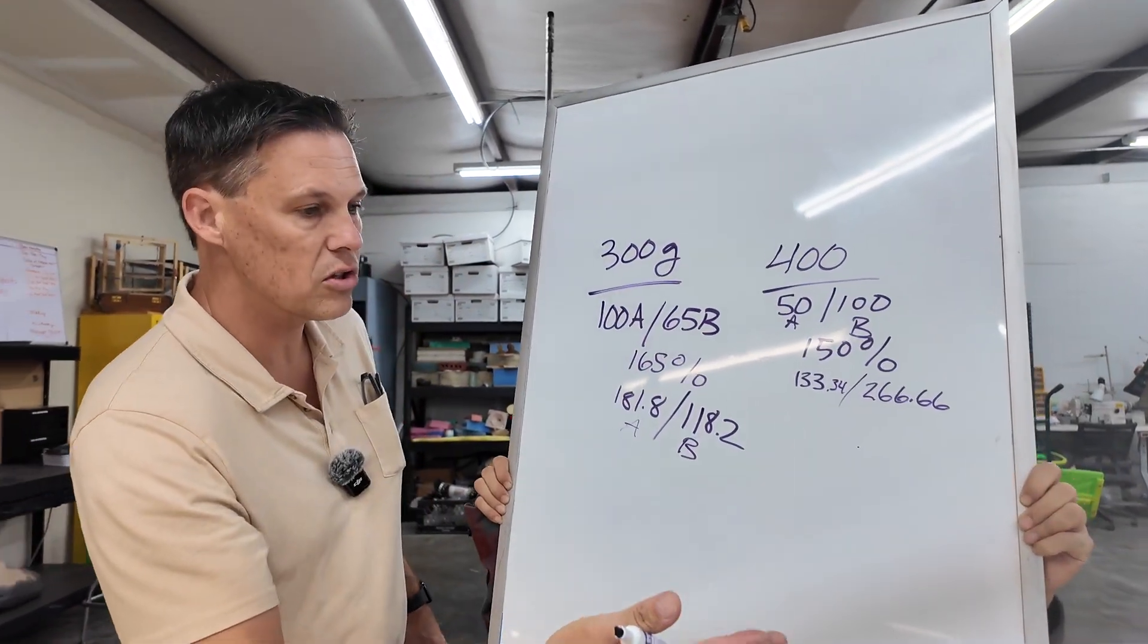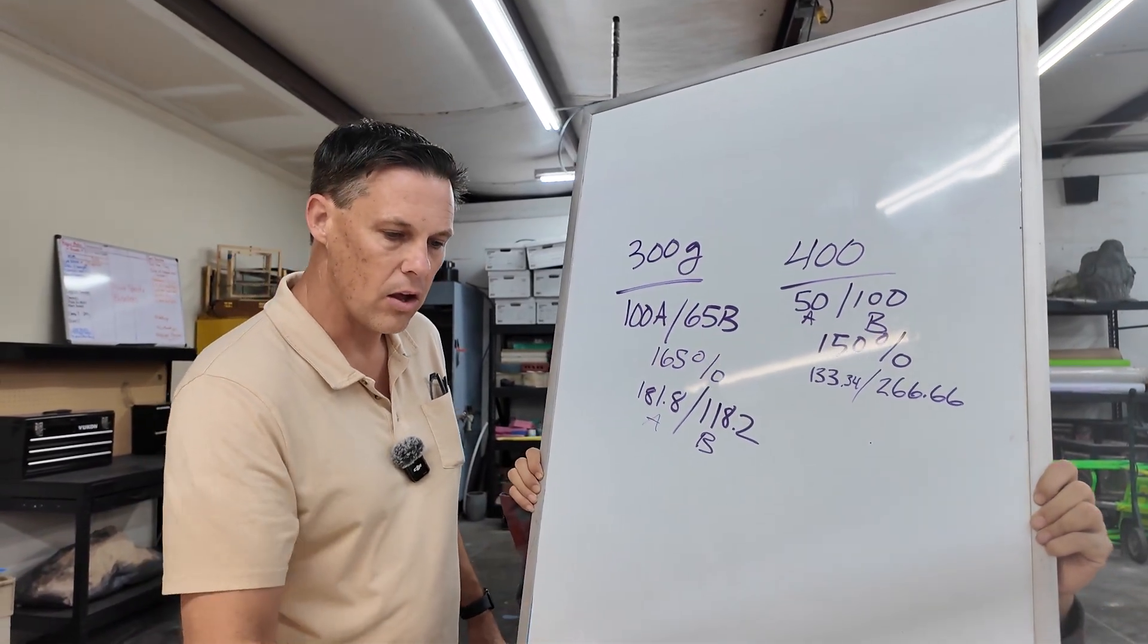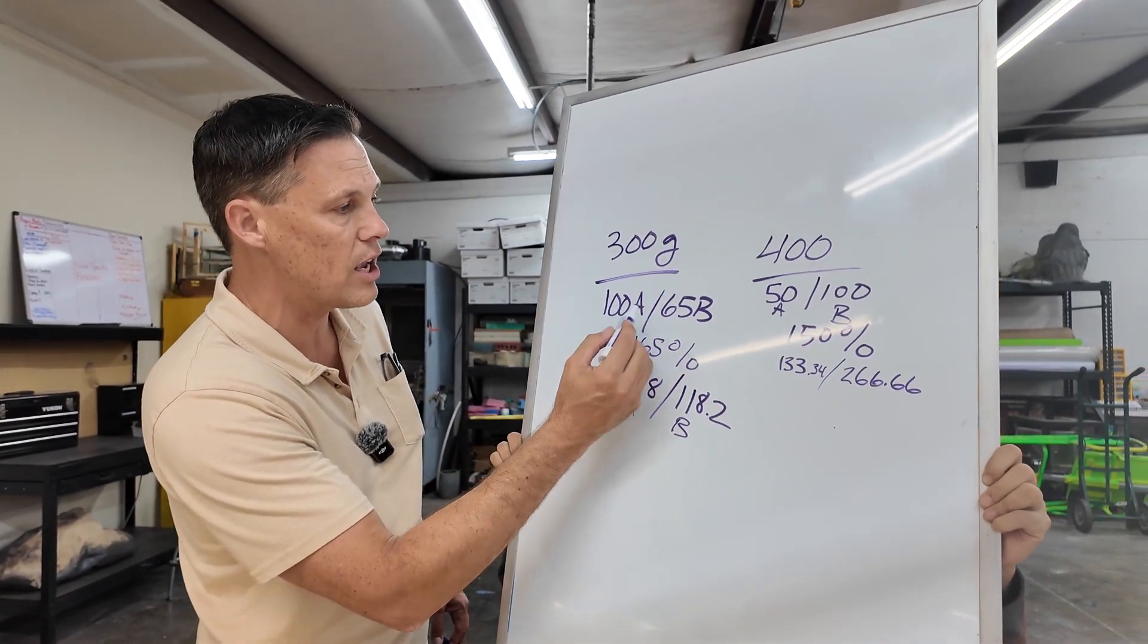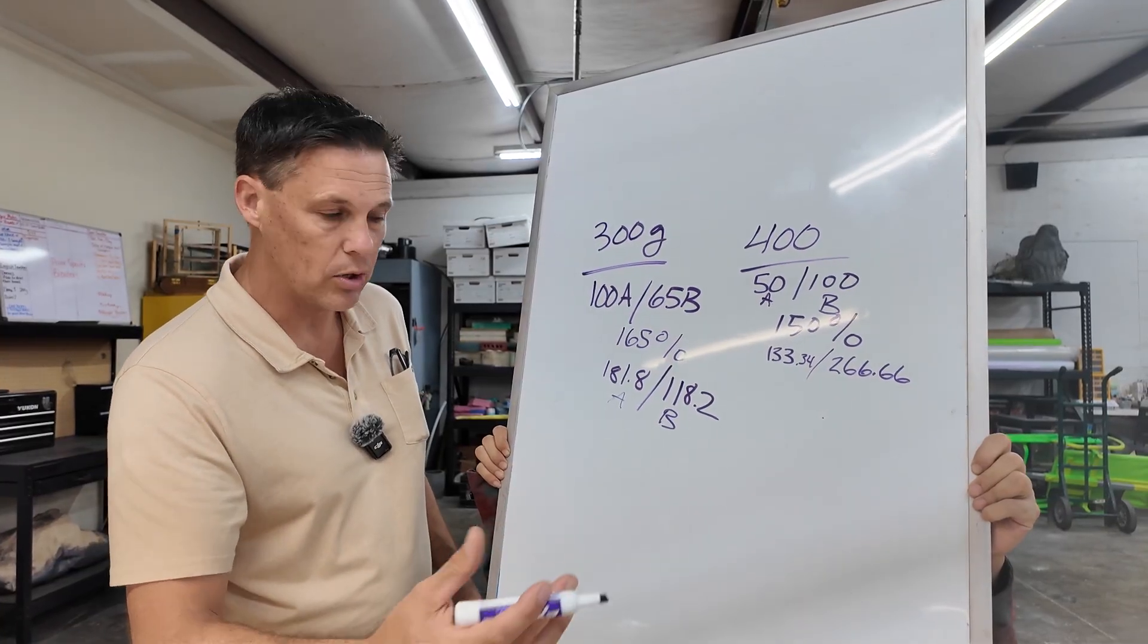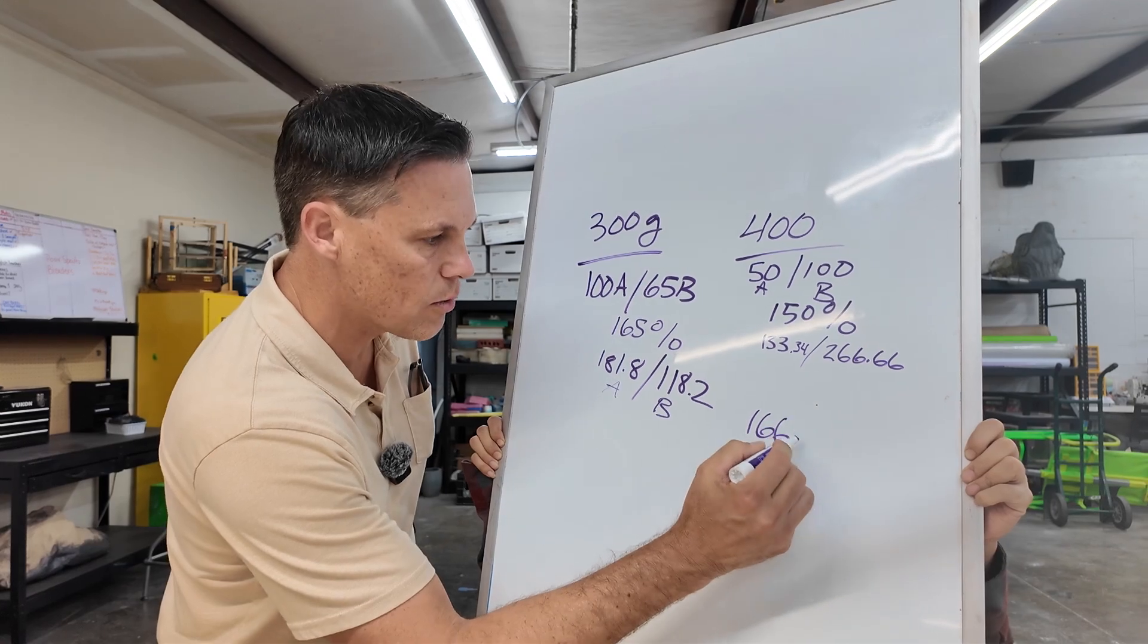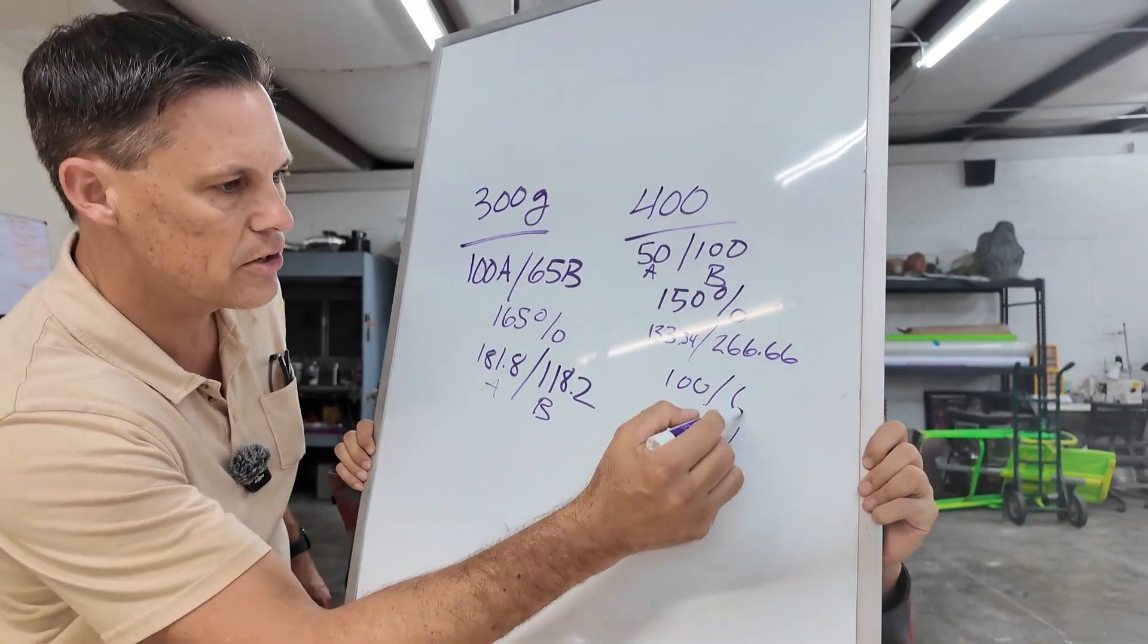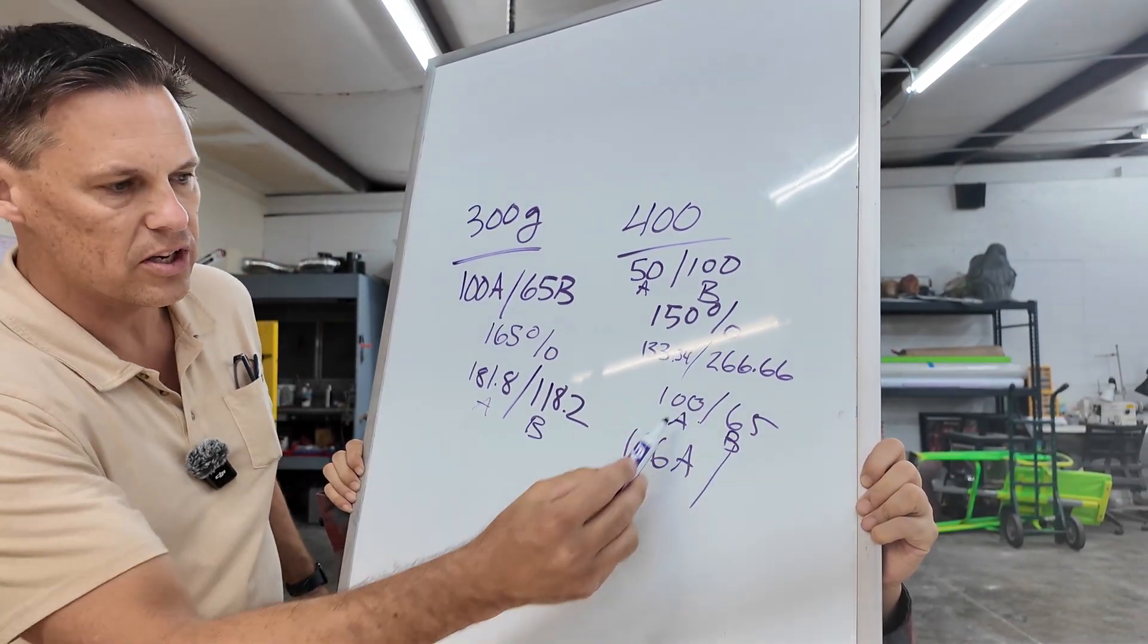That works for all sorts of things. I'll give you one more scenario. Let's say we have a scale and we're going to eyeball stuff, and we want to figure out how to calculate the ratio. Let's go back to this one where we've got 100 parts A to 65 parts B. We pour out the A side, and we end up getting, let's say, 166 grams of A laying on the scale.